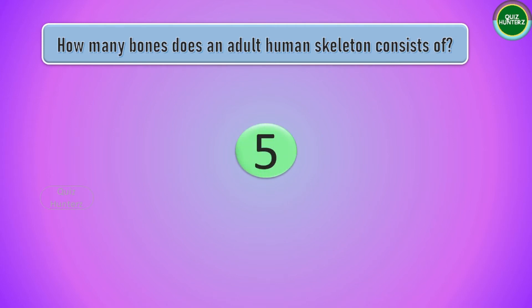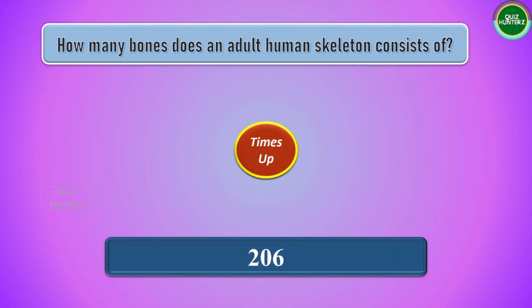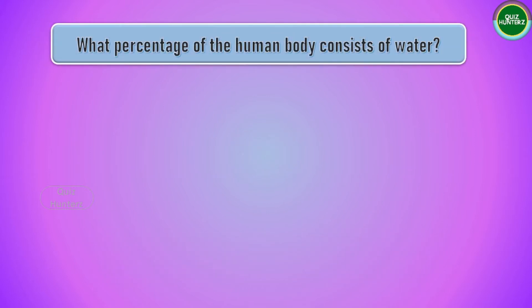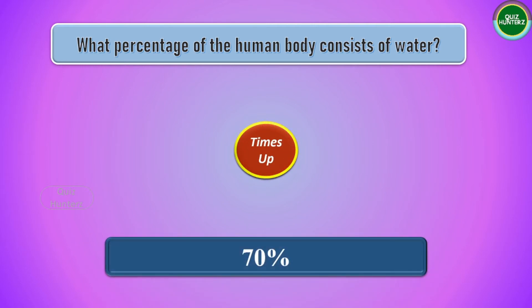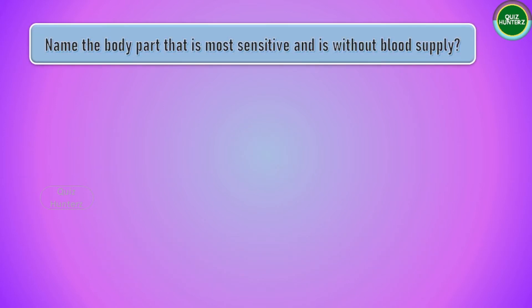Next question: how many bones does an adult human skeleton consist of? The answer is 206. Next question: what percentage of the human body consists of water? The answer is 70%.